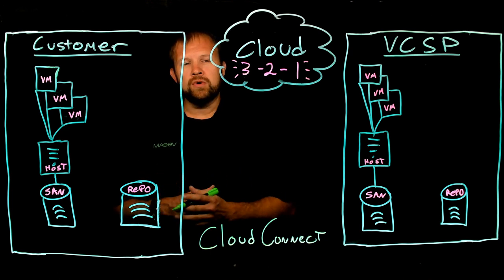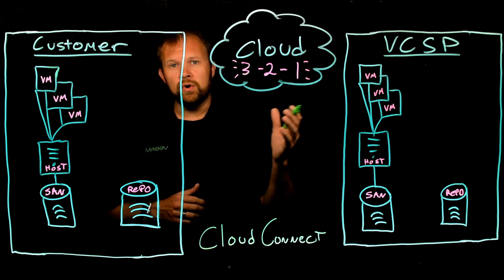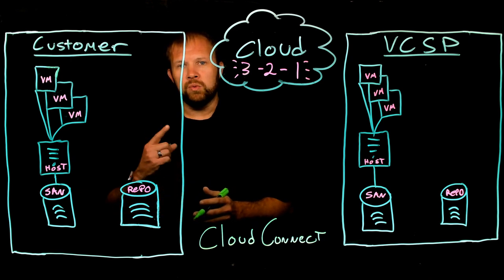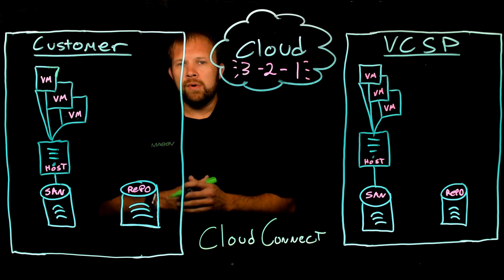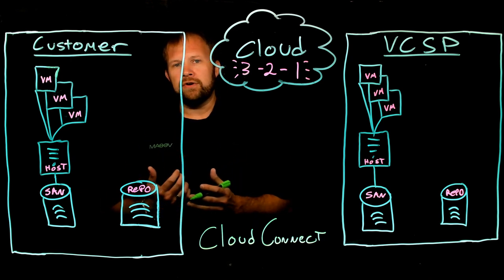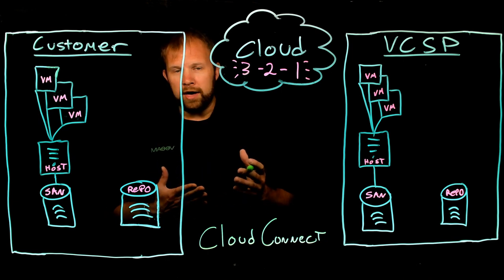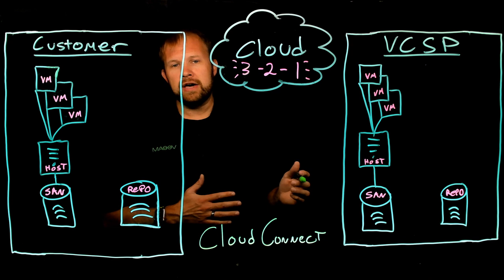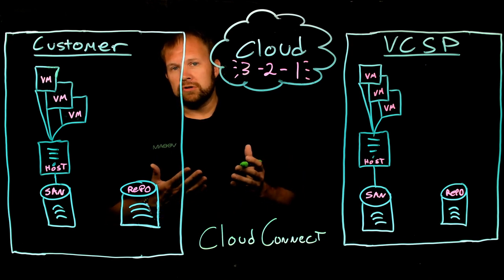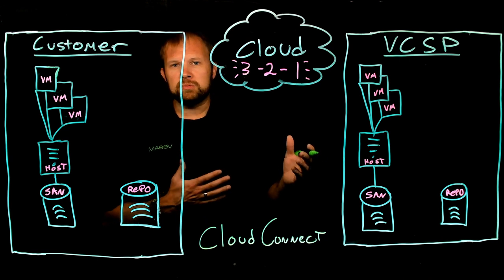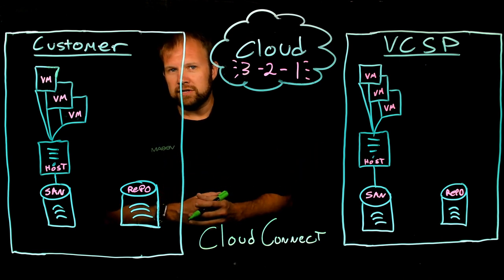The first thing to remember is the best practice strategy for data protection, the 3-2-1 rule. That means three copies of your data — production counts as one of those — two different media types with one being off-site. Cloud Connect can help you achieve that off-site copy, and arguably also a different media type, because many service providers offer tape out as a service.